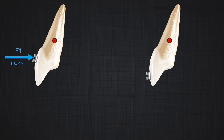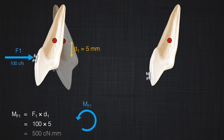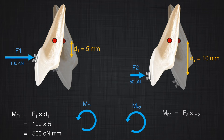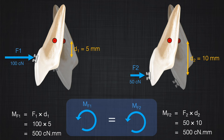Another characteristic of the moment is that, since moment equals force times distance, if you want to change the magnitude of the moment, you can either change the magnitude of the force or the magnitude of the distance, and the end result will be the same. For example, applying 100 centinewton force at 5 millimeters from the center of resistance produces 500 centinewton-millimeter of moment. If you reduce the force to 50 centinewton but increase the distance to 10 millimeters, your moment is again 500 centinewton-millimeter. In both cases, continuing the force around the center of resistance, you produce a counterclockwise moment.